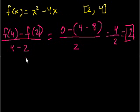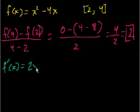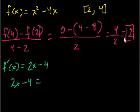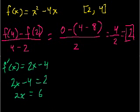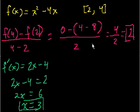Now the mean value theorem tells us there must be some point between 2 and 4 where the slope is exactly equal to 2. Let's figure out what point that is — that's c. We take the derivative: f prime of x equals 2x minus 4. We want to find where this equals 2, so 2x minus 4 equals 2, giving 2x equals 6, so x equals 3. At x equals 3, the derivative is exactly equal to the average slope.